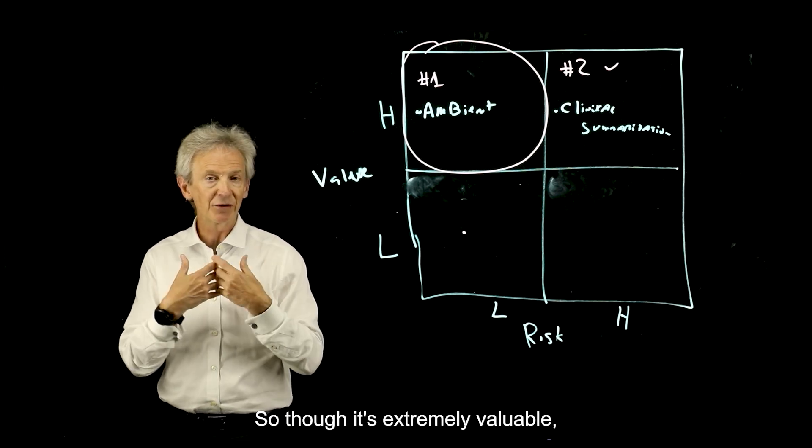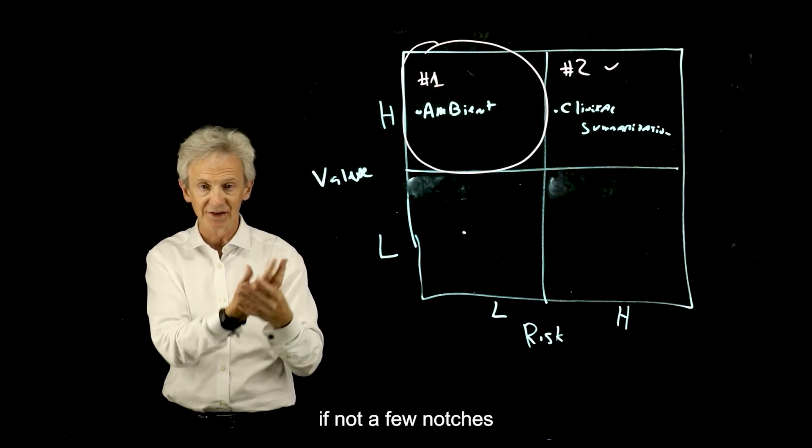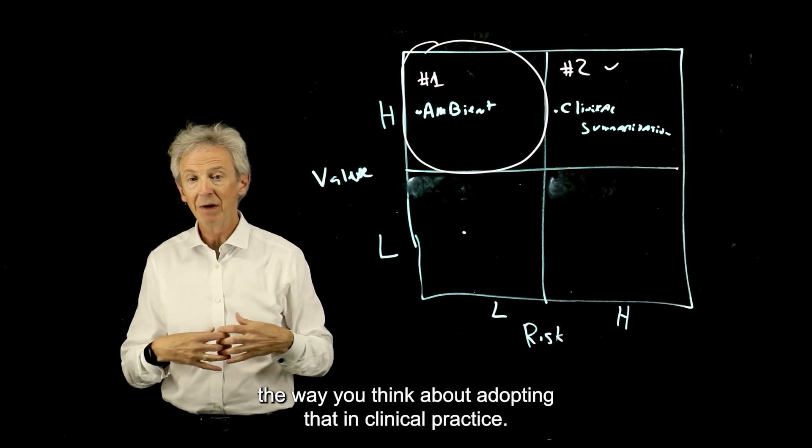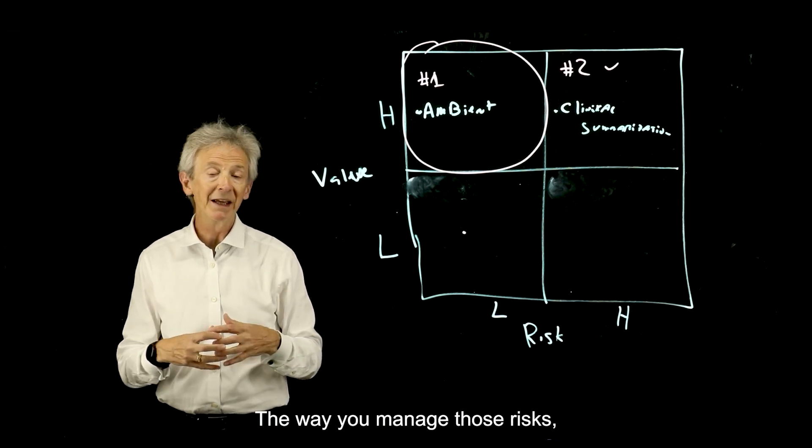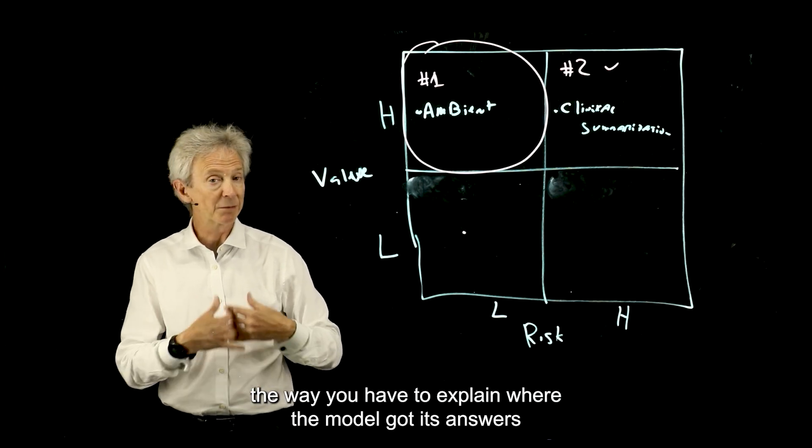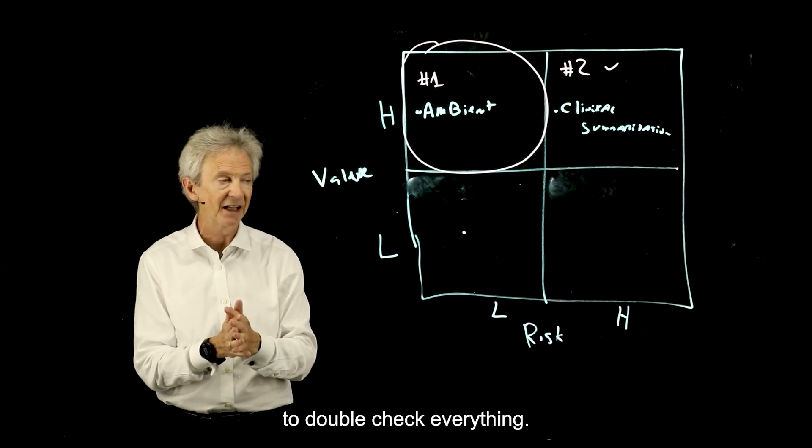So though it's extremely valuable, it is at least a notch higher risk, if not a few notches higher risk. So the way you validate that, the way you think about adopting that in clinical practice, the way you manage those risks, the way you have to explain where the model got its answers, and give the user ability to double check everything, the burden is higher when the risk is higher for all those kinds of features.